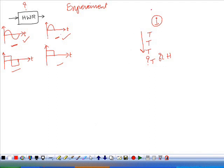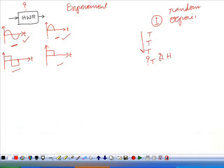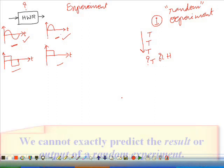Therefore, here we perform an experiment, but the results are probabilistic — they are not deterministic. That is, the outputs cannot be predicted before they actually occur. So there is some degree of uncertainty. This type of experiment in which the results are not predictable is called a random experiment. This is a simple example of a random experiment. The results are probabilistic in nature — we cannot predict the results before they actually occur. That is why this type of experiment is called a random experiment.